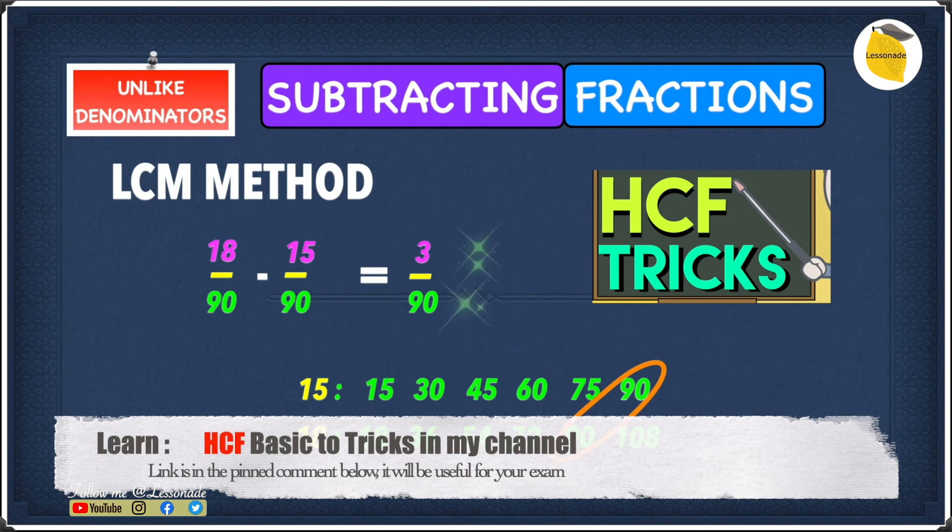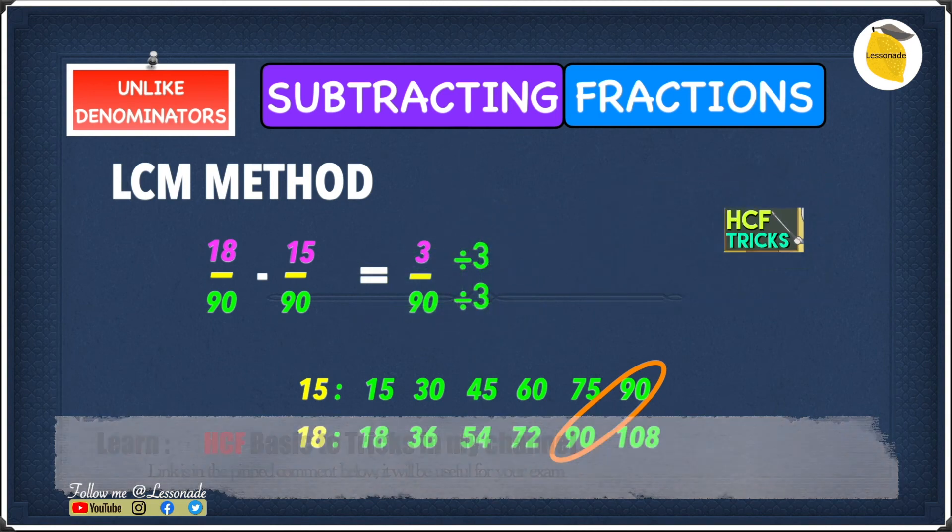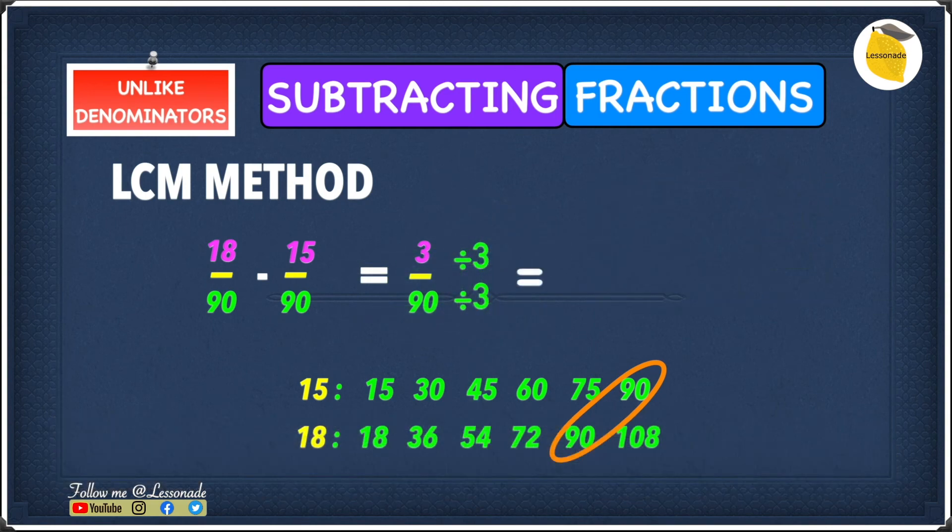The highest common factor for both 3 and 90 is obviously 3. So this means we have to divide both the numerator and the denominator by 3. We know that 3 divided by 3 is 1 and 90 divided by 3 is 30, so this means our answer to this question is 1 over 30.